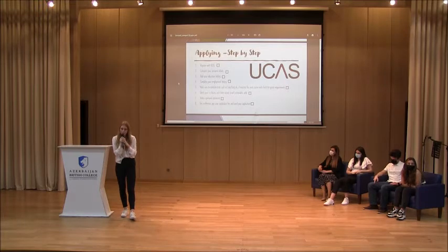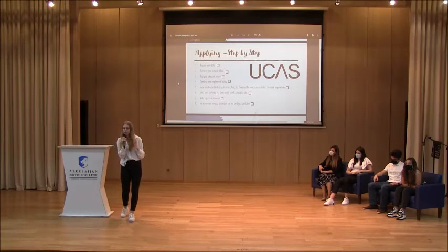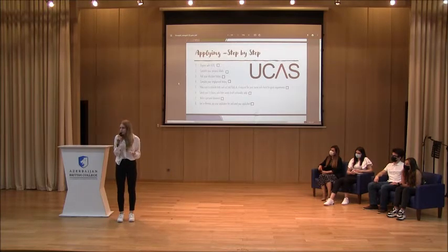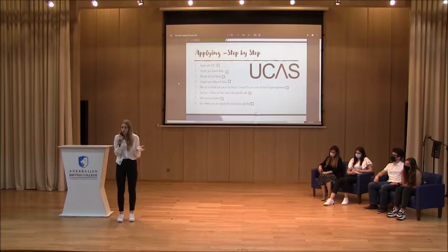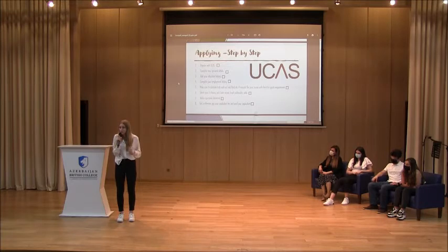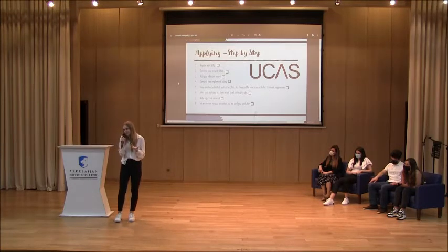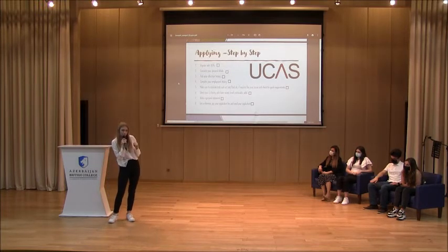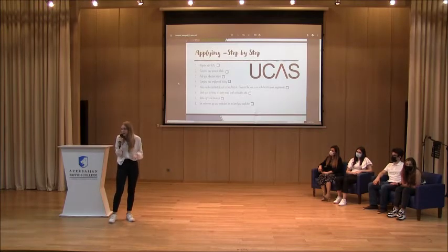The advice I was given and would give you is to be strategic with your five choices. Pick a reach — a school where you look at entry requirements and think you could reach it but aren't sure. Then two or three that are reachable and you know you'll get. And then a safe choice to make sure you get at least one offer, in case you don't do as well in exams.